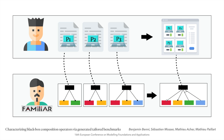In this example, each description of a product is a feature model without variability, and thanks to the merge composition operator available inside the Familiar tool suite, Ben can merge feature models to obtain a new feature model, which represents here a catalog of products.